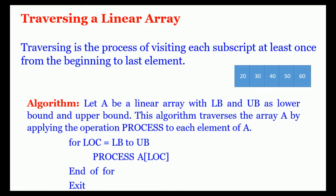The first position, second position — these are called the first and second subscript values. Traversing is the process of visiting each subscript at least once from the beginning to the last element: the zeroth, first, second, third, fourth element. There are five elements, the first starting from zero, and we visit them one by one till the end.